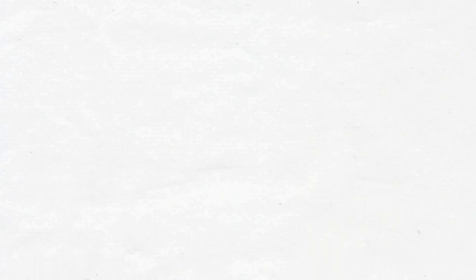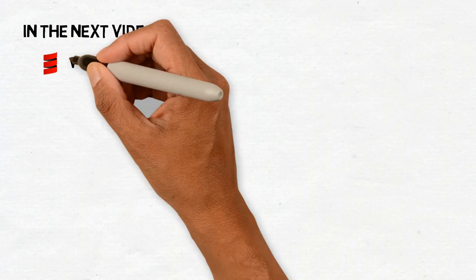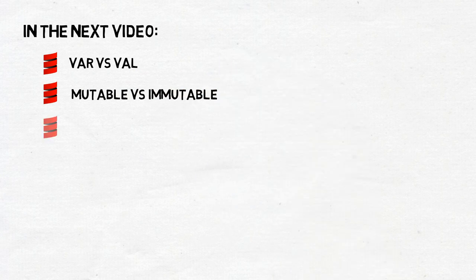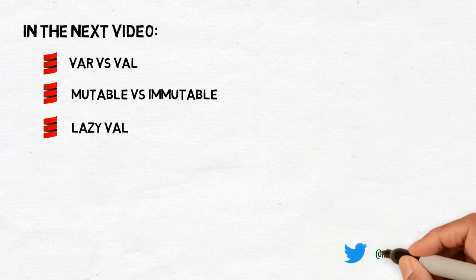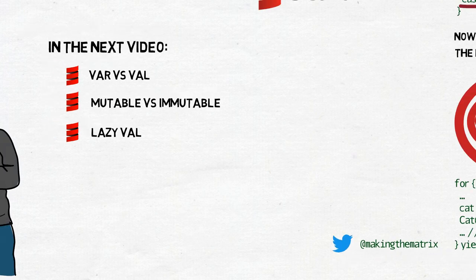Alright, let's stop here for now. In the next video, we'll talk about immutability, so var vs val and mutable vs immutable collections. And we will also learn a bit about being lazy. Thanks for watching. If you have any questions or want to contact me for another reason, you can just leave a comment below. Or you can also find me on Twitter. See you next time.